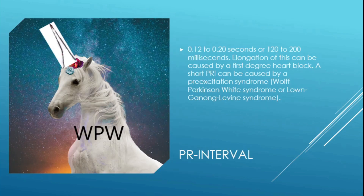Next is the PR interval, which is normally 0.12 to 0.20 seconds (120 to 200 milliseconds). Elongation can be caused by heart blocks, especially first-degree heart block. A short PR interval can be caused by a pre-excitation syndrome such as Wolff-Parkinson-White or LGL. In Wolff-Parkinson-White you can see the delta wave — a short PR interval showing the pre-excitation.